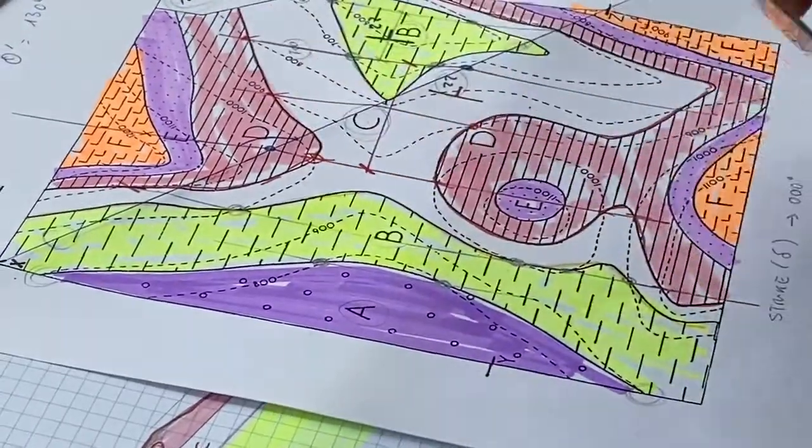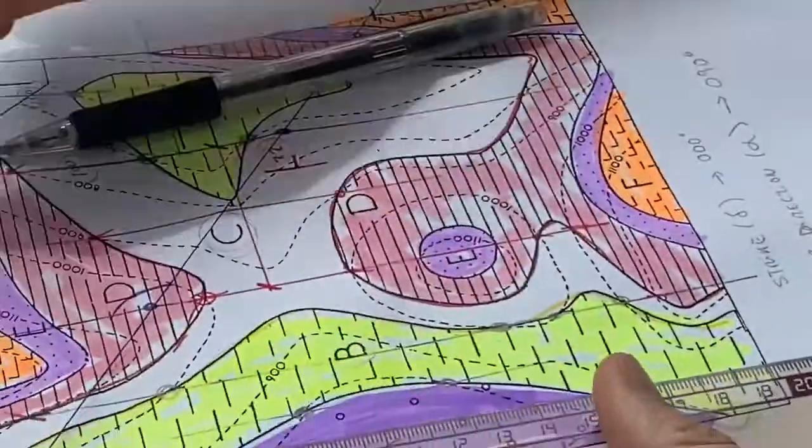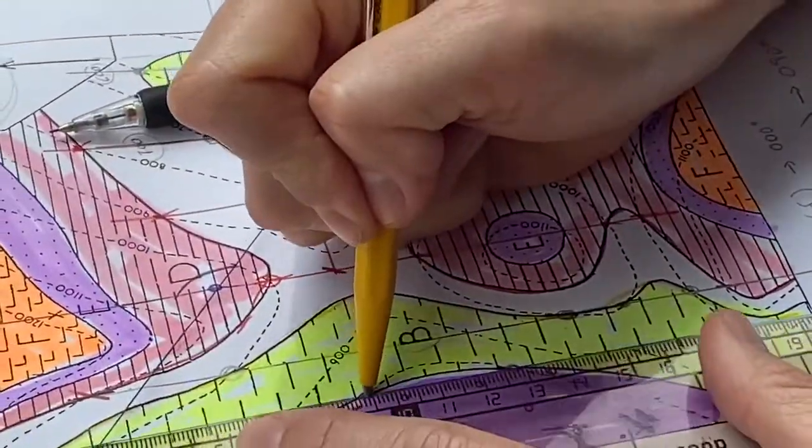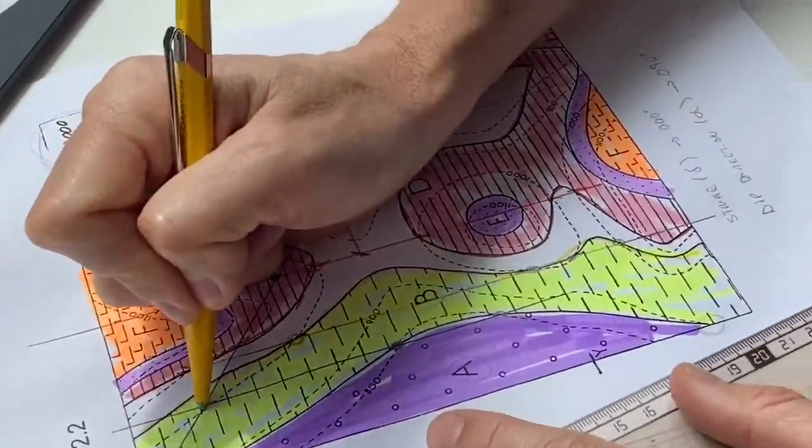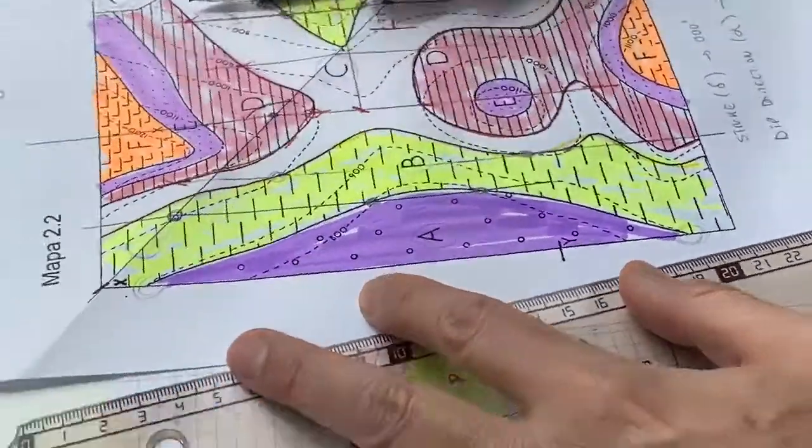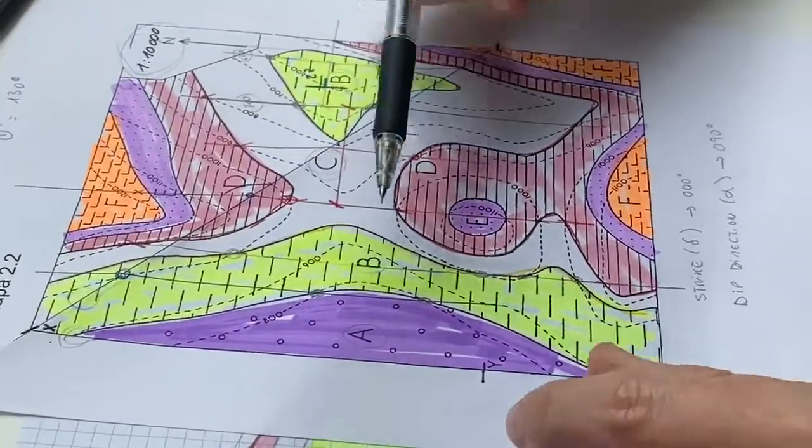We can connect this horizontal line and extend it until it cuts my cross section. So I know that at this distance we have one point located at 800 meters.